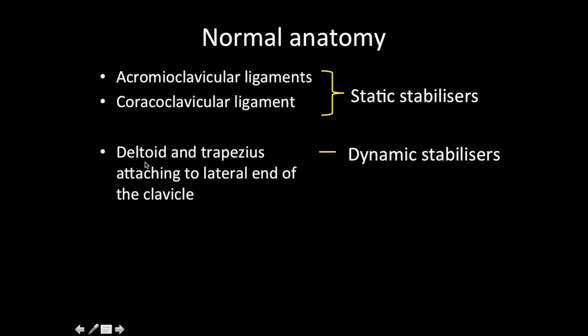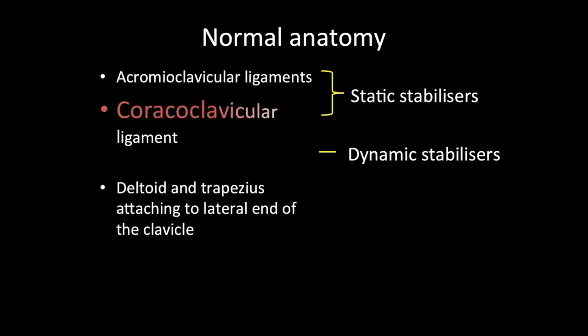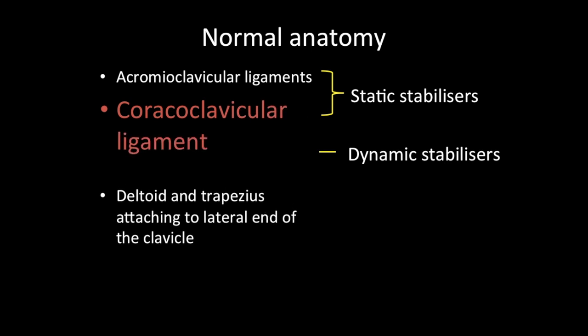The dynamic stabilizers consist of the deltoid and trapezius that attach to the lateral end of the clavicle. The most important and strongest stabilizer of the AC joint is the coracoclavicular ligament. The acromioclavicular ligaments are present along the joint capsule and cannot be differentiated from it. They act as a horizontal stabilizer, reinforcing the joint against small degrees of distraction — so whenever there is injury to this ligament, there will be widening of the joint space.